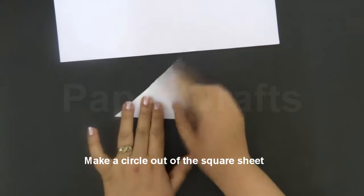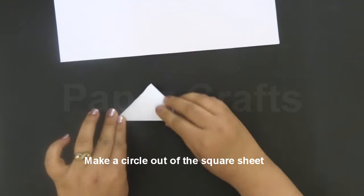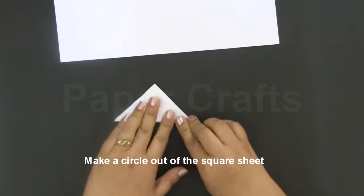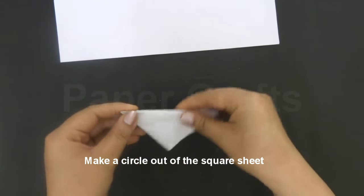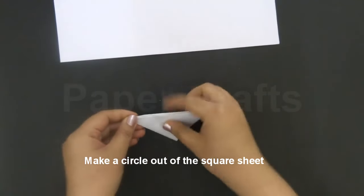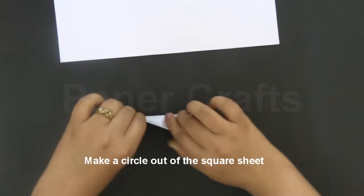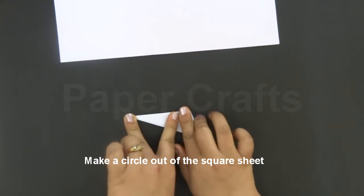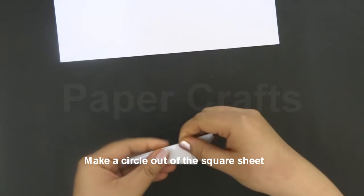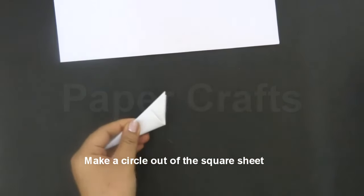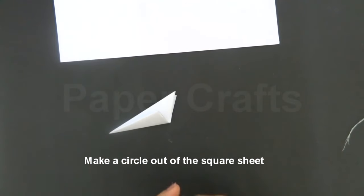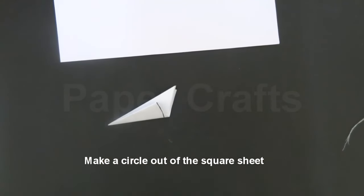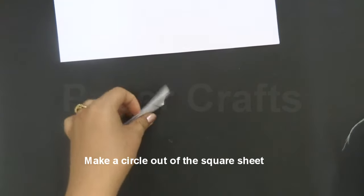Fold it into half. Again fold it into half. Now fold it along this edge. To form a circle we need to make an arc. With the help of a marker we will make an arc. Cut it along this arc.